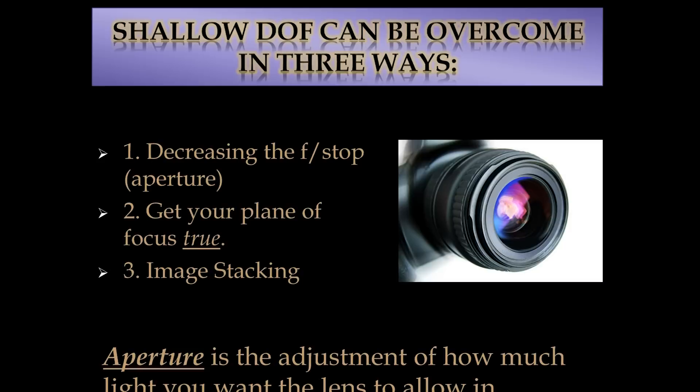And finally, image stacking. Image stacking is probably the greatest advent of modern macro photography. There's a lot of software that helps you stack images — you take five, ten, even fifteen or more shots of the same subject at different focus points: the front, the middle, the back. You take various individual shots all over the subject, then combine them all into one image where every point is in focus. That's called a stack, where the entire subject is sharp because you've combined several photographs into one image.